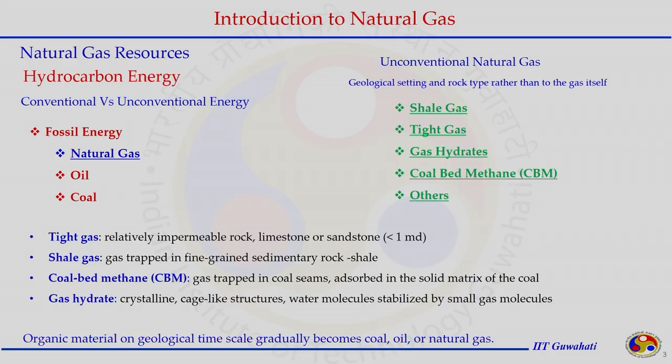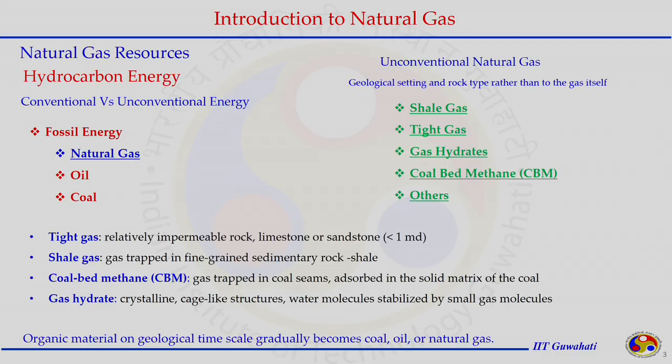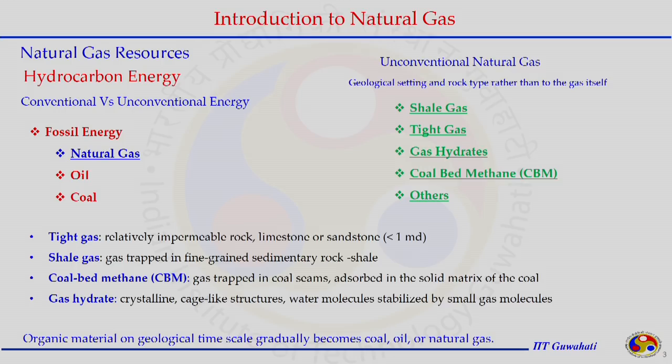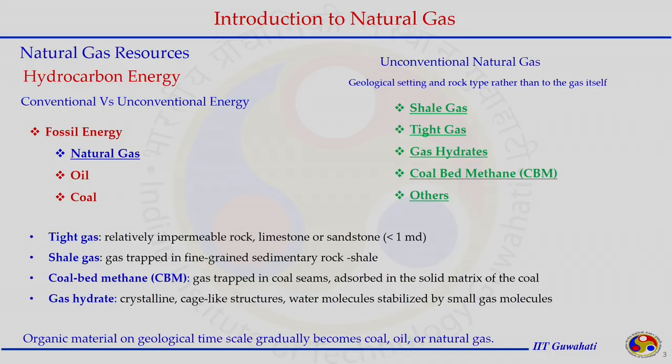For unconventional natural gas, the geological setting and rock type — rather than the gas composition itself — define the unconventional sources. How natural gas is trapped in the reservoir formation or coal seams defines categories such as shale gas, tight gas, gas hydrate, coal bed methane, and other possible unconventional sources.